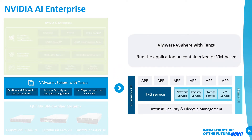For VMware, vSphere with Tanzu can run applications on containerized or VM-based infrastructure. It gives you intrinsic security and lifecycle management for your infrastructure, including network service, registry service, storage service, and VM service. Everything needed for running on a Kubernetes cluster is enabled by the TKG service. Altogether, NVAIE provides pretty much everything you need to deploy AI infrastructure on the VMware software stack.